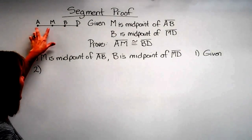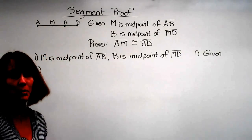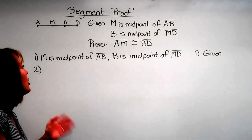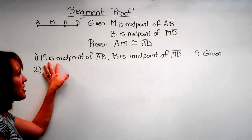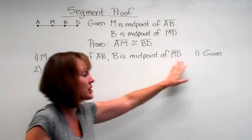And we want to prove then that segment AM is congruent to segment BD. And you think, yes, I can do that. So let's start with what we were given. M is the midpoint of AB, B is the midpoint of segment MD. And that was given.